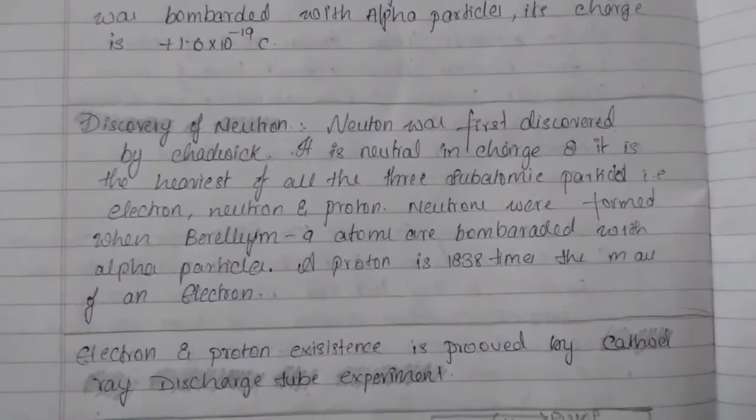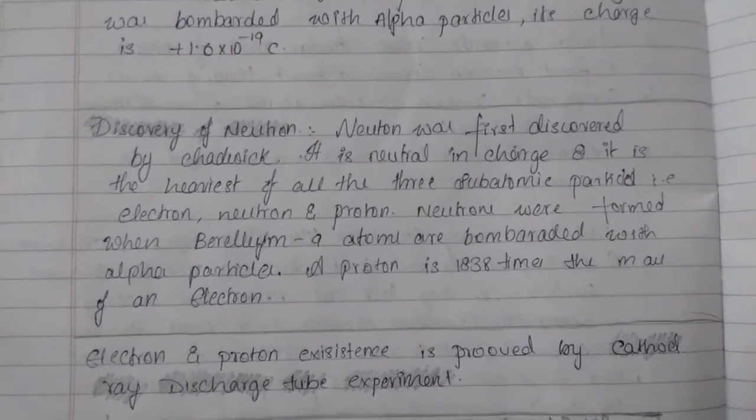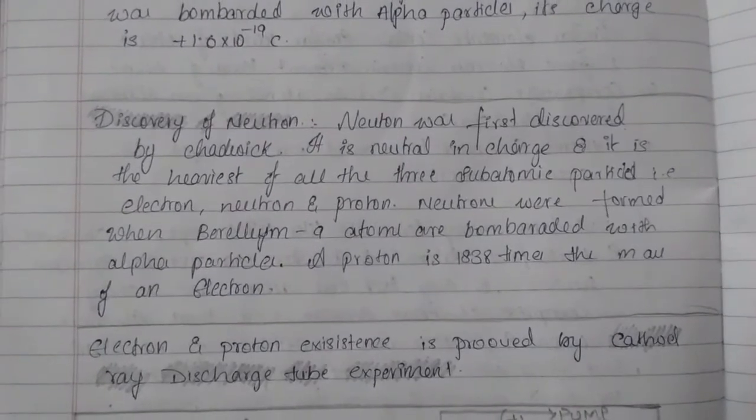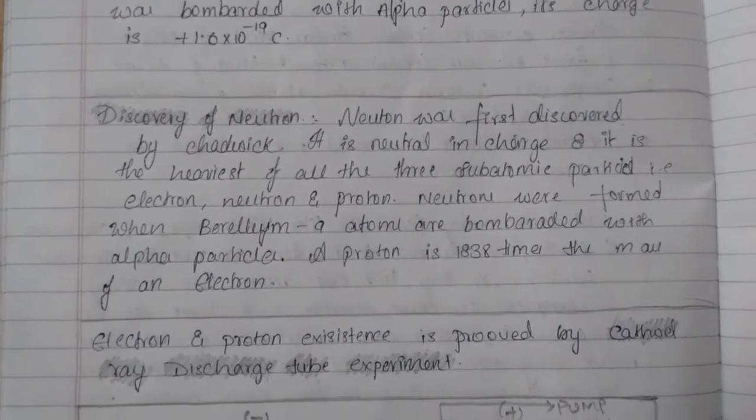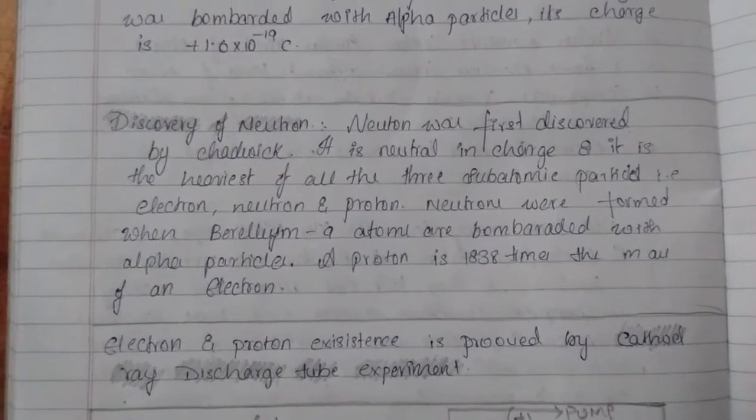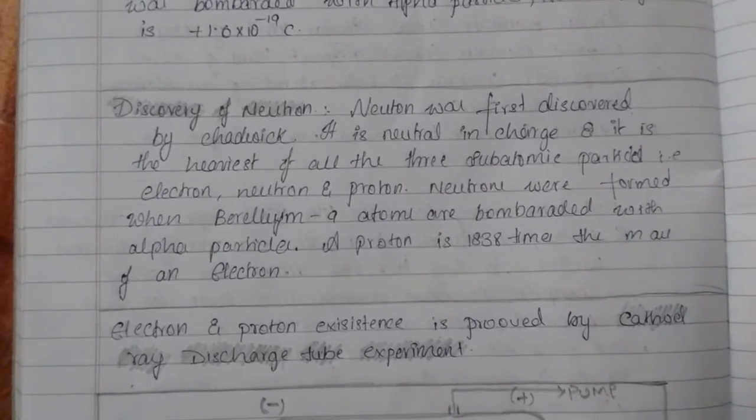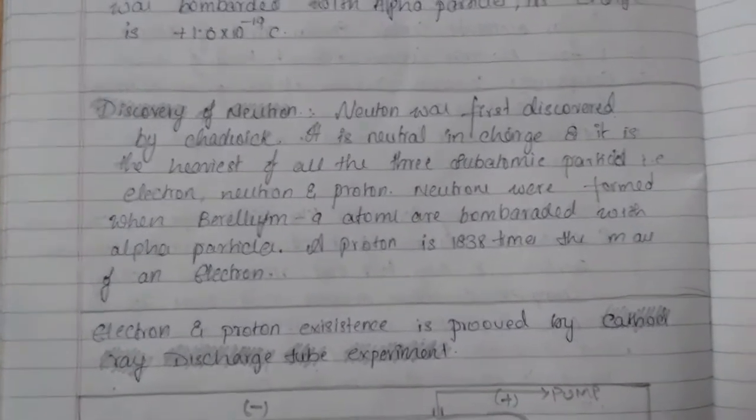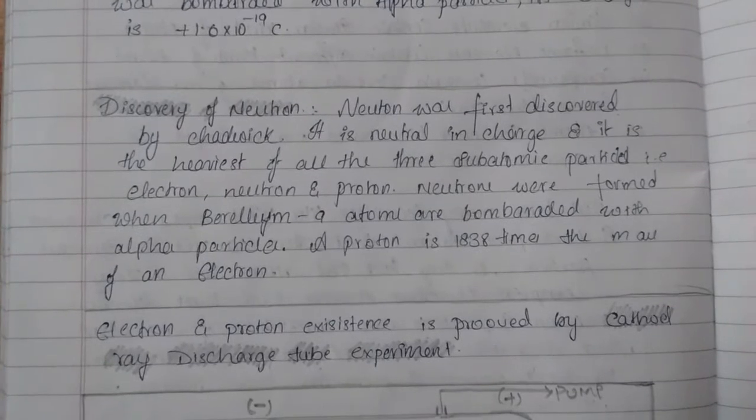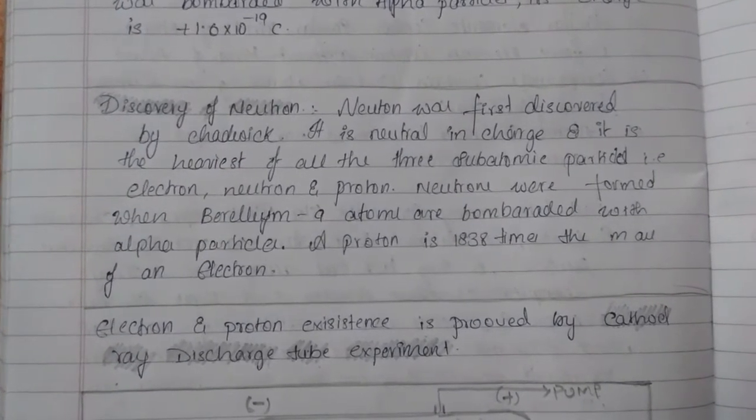Neutron was first discovered by Chadwick. And it is neutral in charge and does not have any positive or negative charge. And it is the heaviest particle in an atom and more than the electrons and the protons. And it is one of the three subatomic particles of the atom.